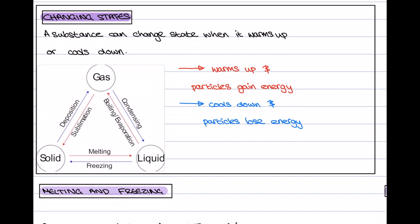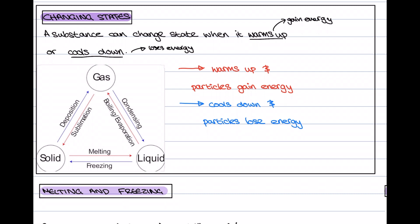Now we're going to look at how we change a substance from state to state. A substance can change state when it either warms up or cools down. When we warm a substance up, it gains energy — we have to add energy to it. And when we cool it down, it loses energy. Each of these state changes has a special name depending on the change of state.